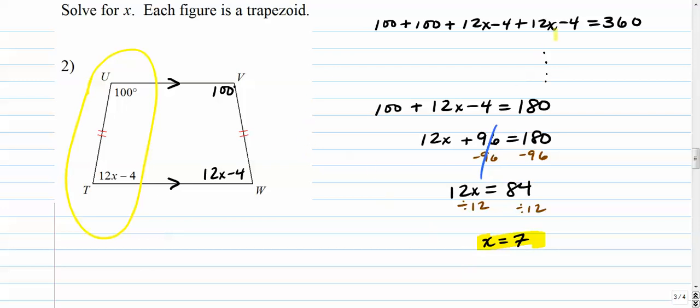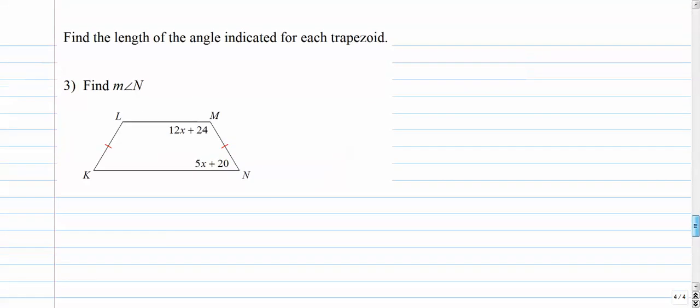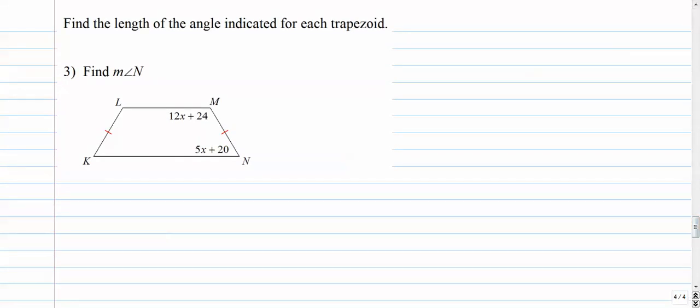You can get that answer by doing this up here as well. So you take your pick. I would probably recommend the bottom one. Let's go to number 3, last one here. Find the measure of the angle indicated for each trapezoid. So we want to find the measure of angle n, which is down here.